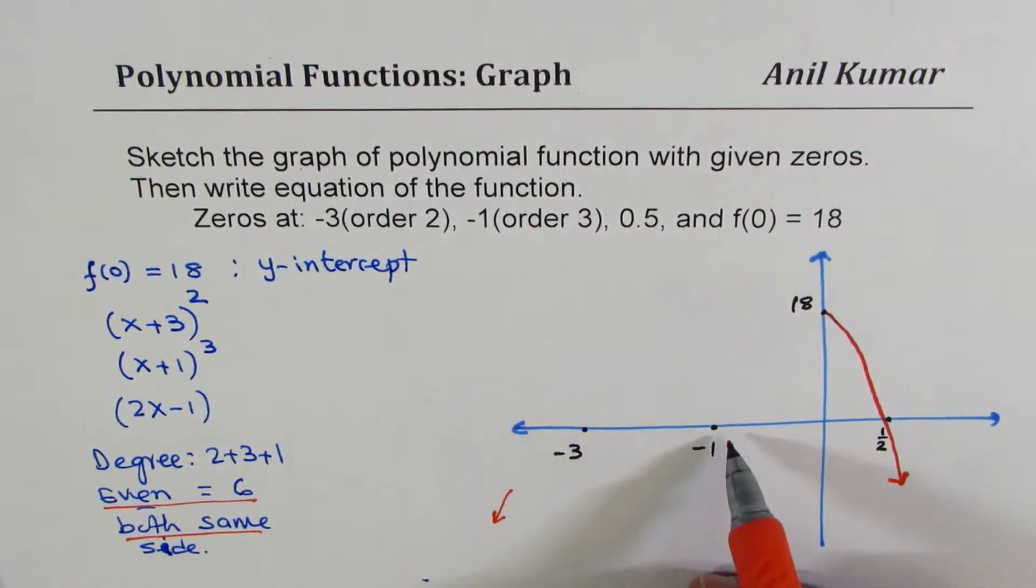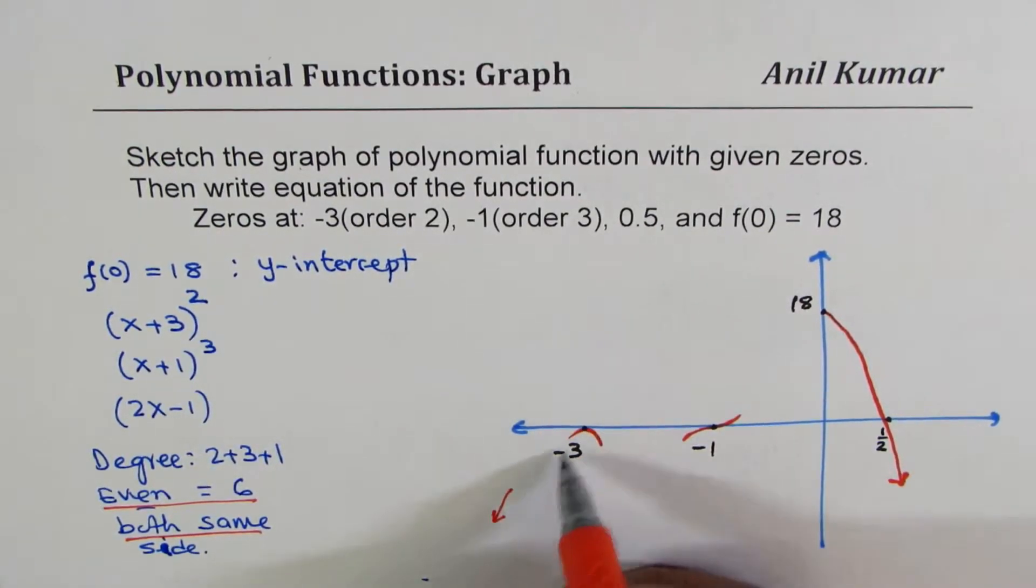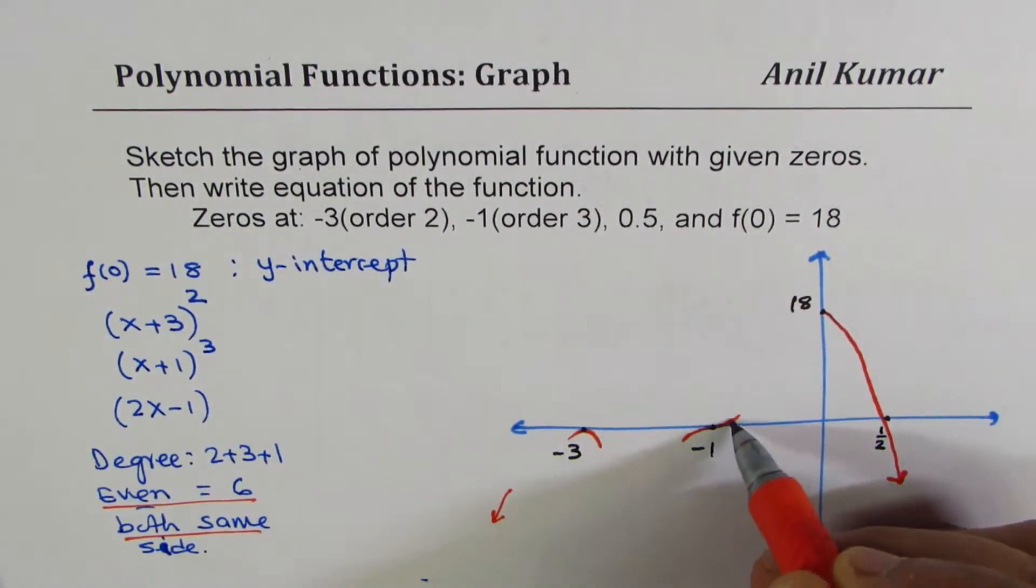So, let's look into these two zeros now. So, at minus 1, order 3 means it will come down and then move like a cubic function, kind of like this. So, it will not go like a linear function, but like a cubic function. And at minus 3, it is going to turn like a parabola.